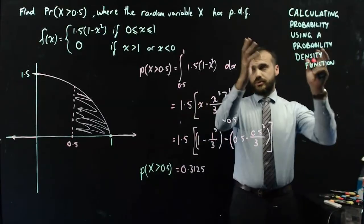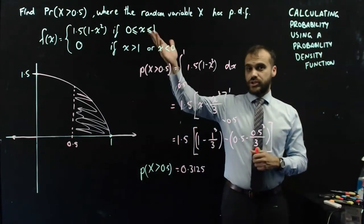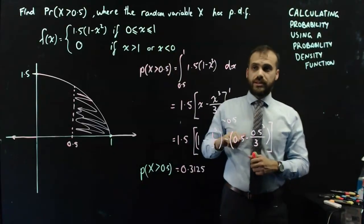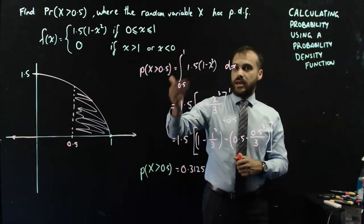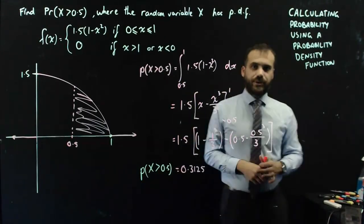So that's really what it comes down to with probability density functions. If you want to find the probability of a certain thing happening when it comes to a probability density function, find the area under the curve where that event is happening, and you'll have your probability.